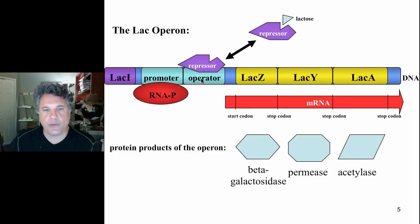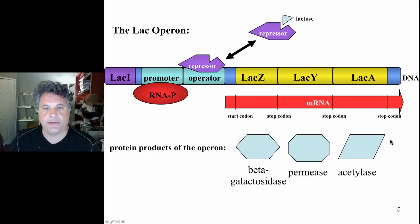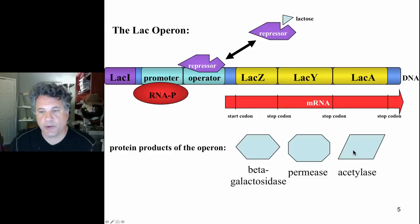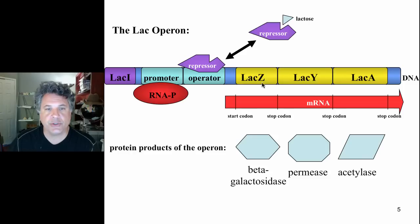The situation where repressor is bound to operator DNA — turning off transcription — occurs when there is no lactose around to degrade. Why invest energy in producing operon gene products if there is no lactose available to be broken down? It would not be energetically smart to invest in transcription and translation of the mRNA into protein products if there is no use for those proteins. So this is the default state of the operon — it is off when lactose is unavailable to the cell.